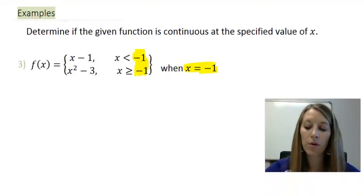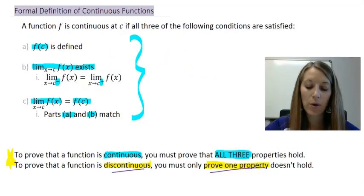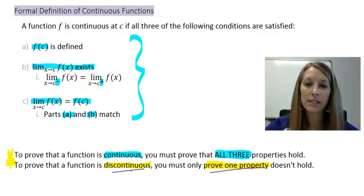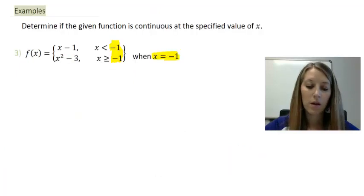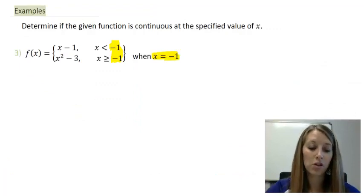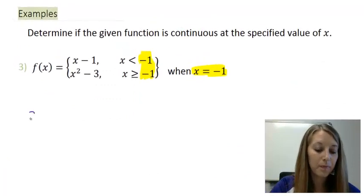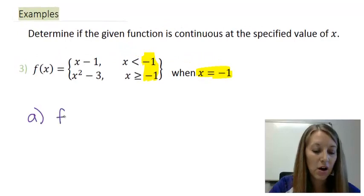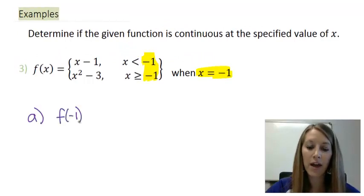If we want to prove that this is continuous, we have to prove all three properties hold. If we find out it is discontinuous, we just have to prove which property does not hold. If you do not know where to start, I suggest starting with just the first property — property A — which asks: is our function at our given x value defined or not?